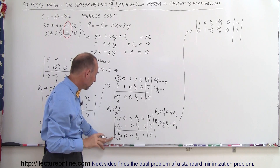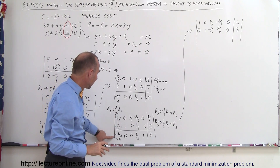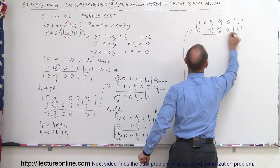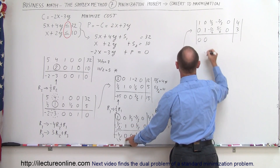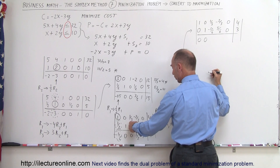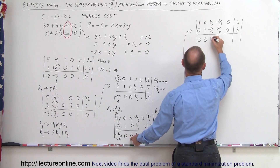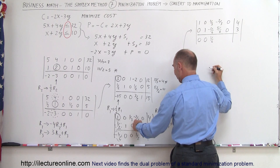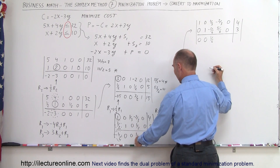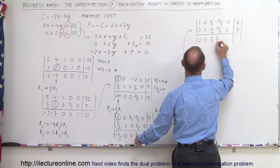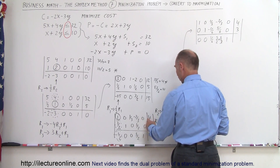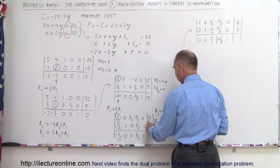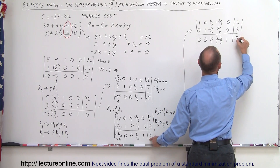For the third row: R3 becomes positive 1/2 times R1 added to R3. 1/2 times 1 added to minus 1/2 gives 0. 1/2 times 0 nothing changes. 1/2 times 1/3 gives 1/6. 1/2 times minus 2/3 added to 3/2 gives 3/2 plus 2/3. This stays as 1. And 1/2 times 4 is 2, added to 15, gives 17.